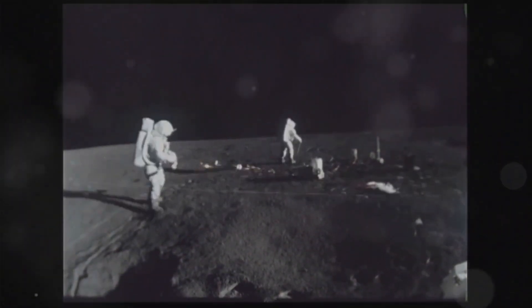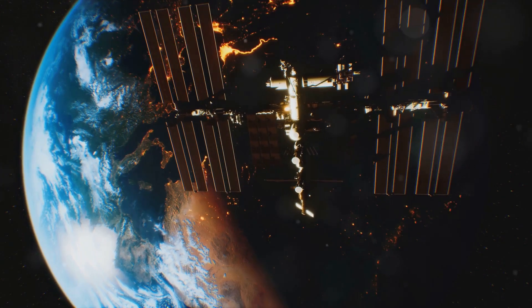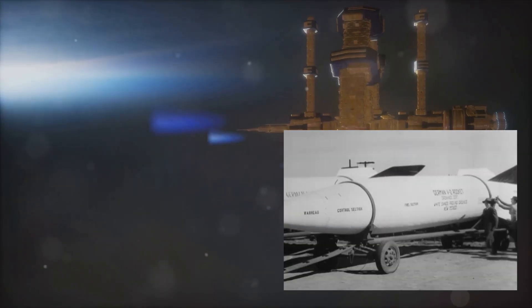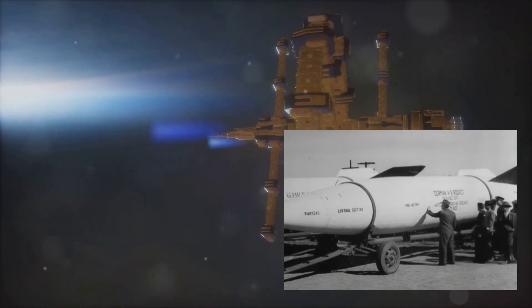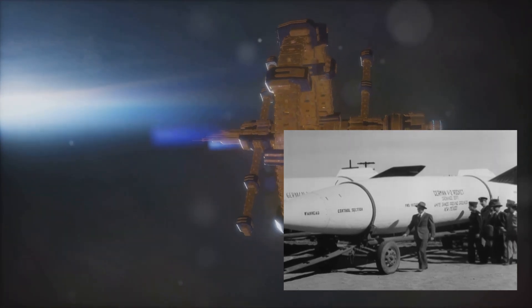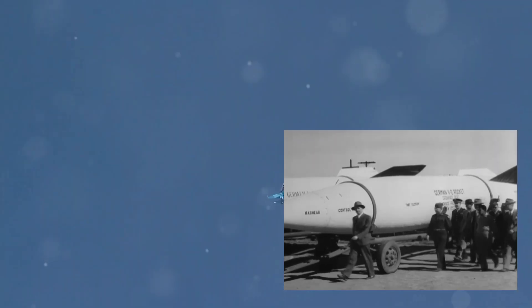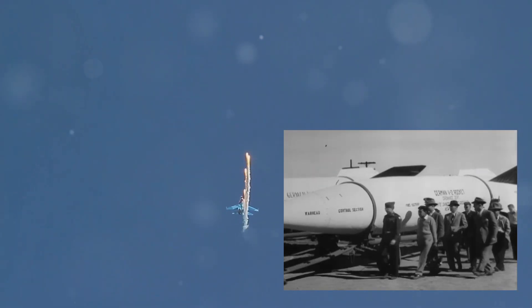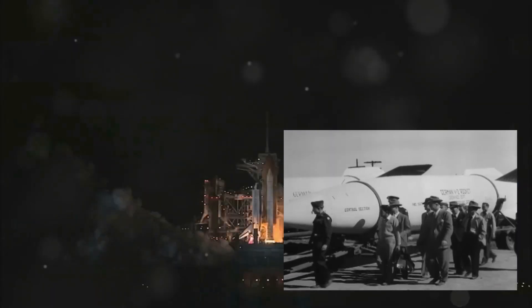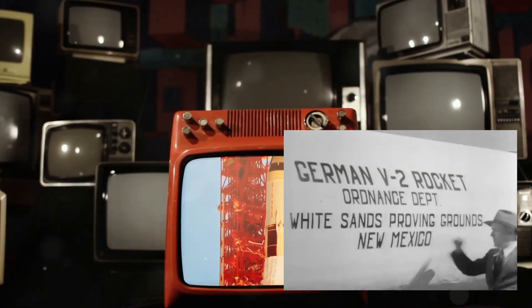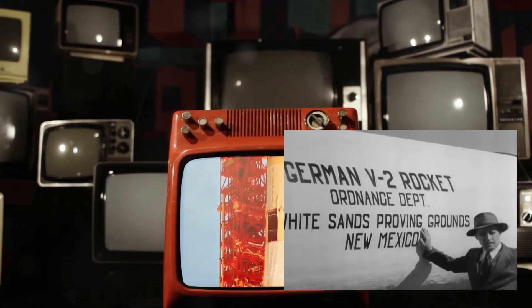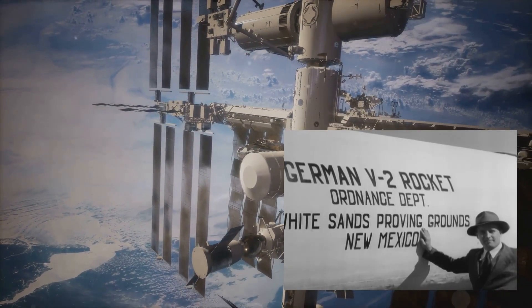Under von Braun's leadership, the United States space program flourished. His vision and expertise were instrumental in developing the rockets that would carry American astronauts into space. From the early successes of the Redstone rocket, which launched America's first satellite, Explorer 1, to the mighty Saturn V, von Braun's fingerprints were on every milestone.